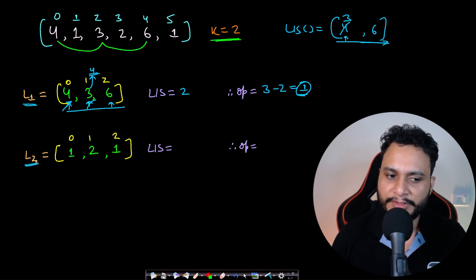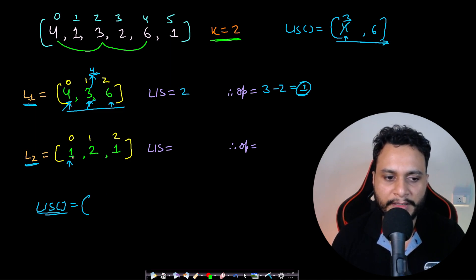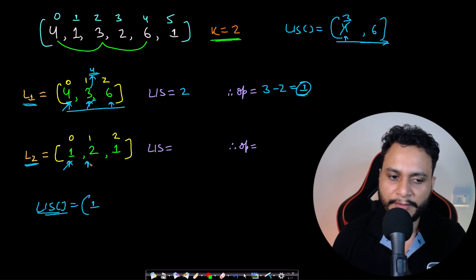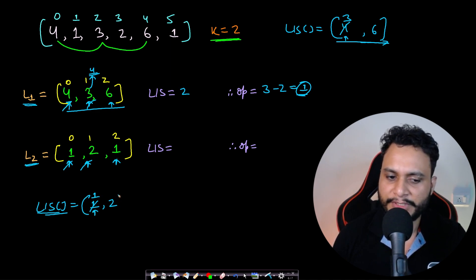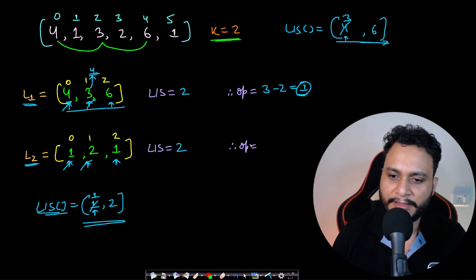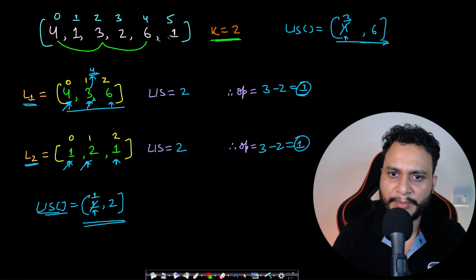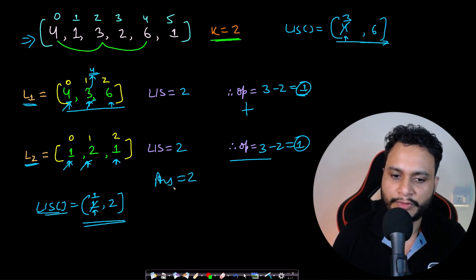For List 2 = [1, 2, 1]: empty LIS array. For 1: out of bounds, append → [1]. For 2: out of bounds, append → [1, 2]. For 1: lower bound stops at 1, override to 1 → [1, 2] (unchanged). LIS size = 2. Operations = 3 − 2 = 1. Total operations = 1 + 1 = 2, so the answer is 2.